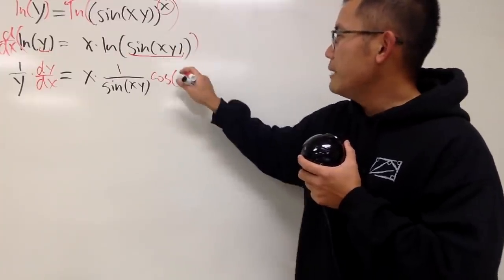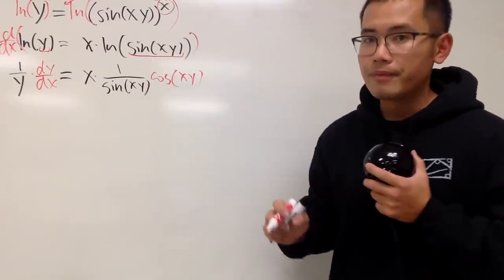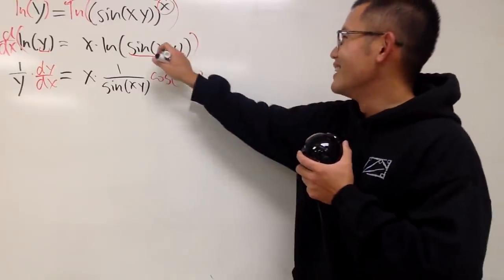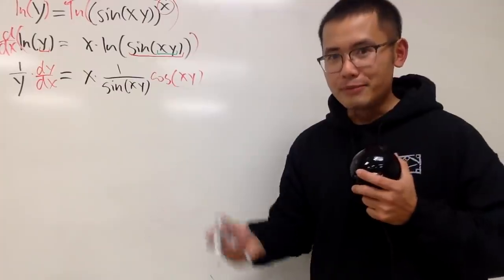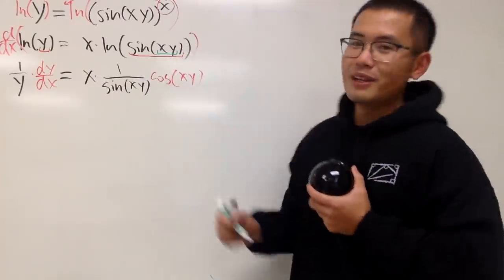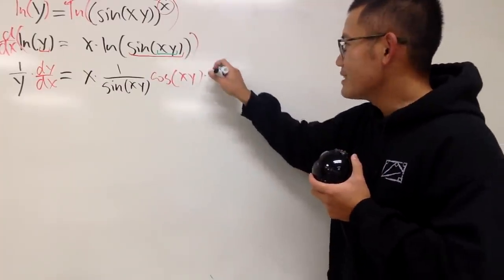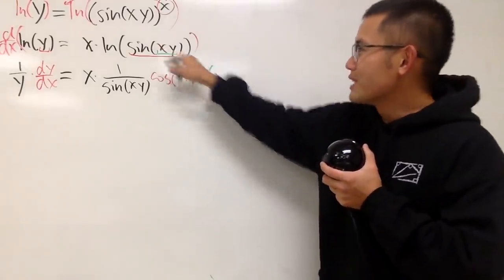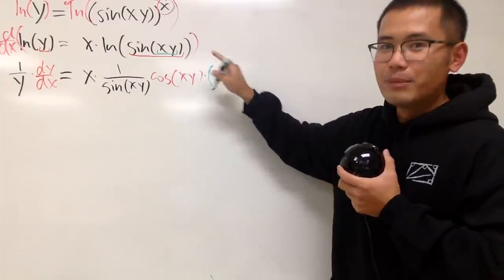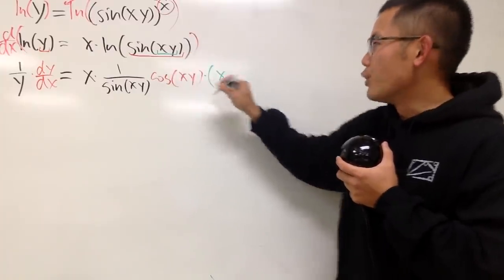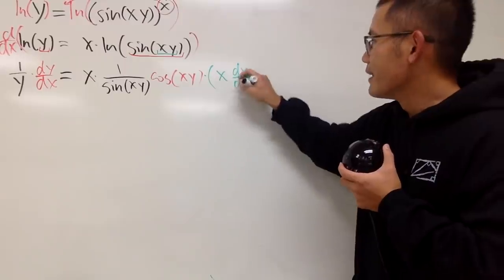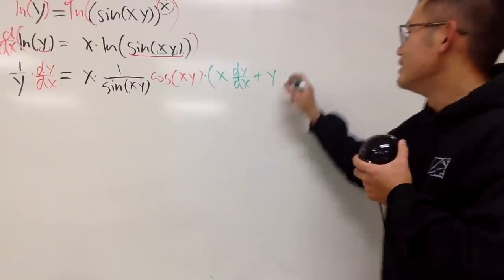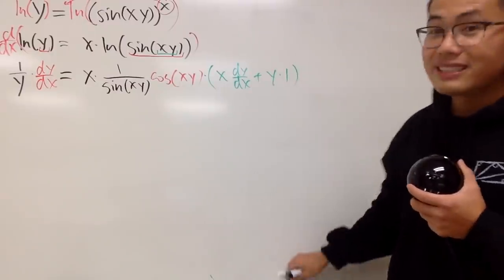The derivative of sine is cosine, so we have cosine, and the input stays the same. We have to use the chain rule one more time, because inside is x times y, so we have to find that derivative as well. Since it's x times y, we use the product rule here. Keep the first function x and multiply by the derivative of the second — derivative of y is dy/dx. Then add the second function y times the derivative of the first. Derivative of x is just 1. So that's the first part.